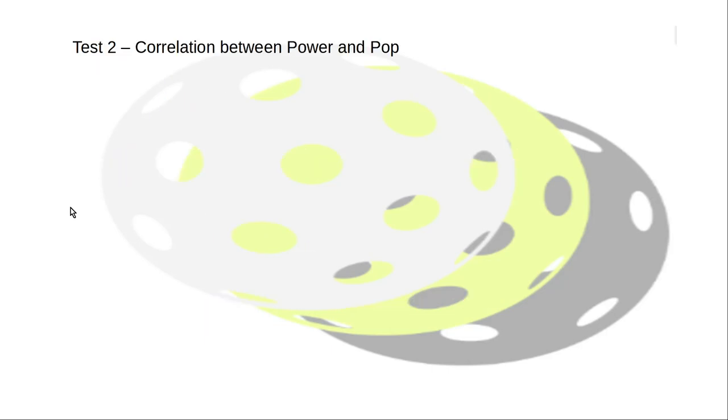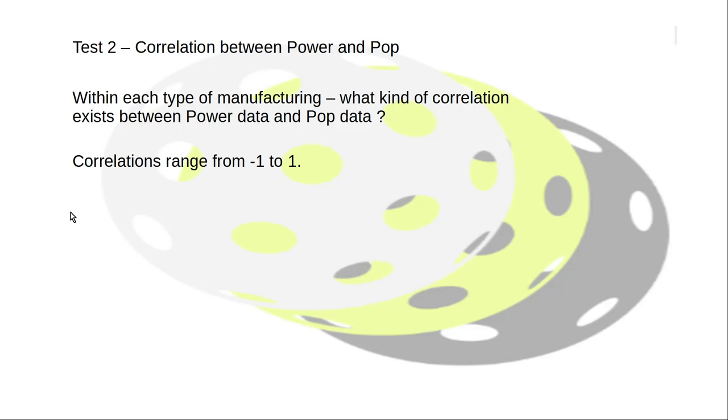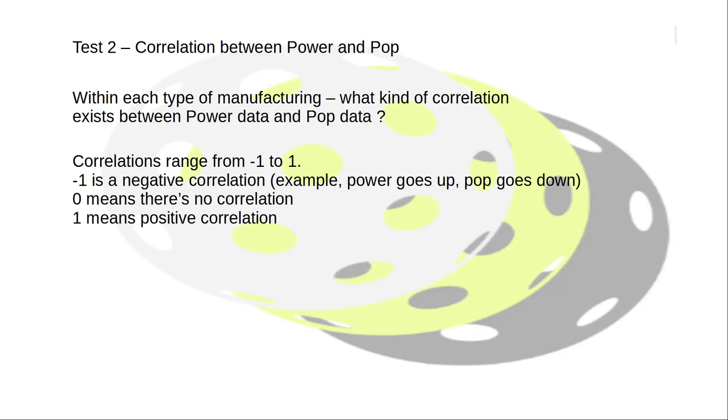So the next test I decided, let's see if power and pop correlate within a manufacturing type. We're going to talk a little bit about what correlation means. Correlation numbers range between negative one and one. A negative one is a correlation where you have the opposite. One goes up, the other goes down in a pretty extreme manner. So in this case, power were to go up, pop were to trend down. I mean, that doesn't make sense, I was just giving you an example of a negative one. Zero would be no correlation, and one would be a positive correlation. So this is an example of positive correlation. So as power goes up, pop also goes up in general. You know, you've got your trend lines, and then no correlation. Anyway, I hope that makes sense.